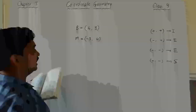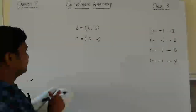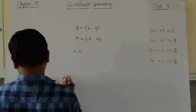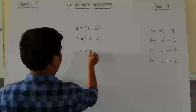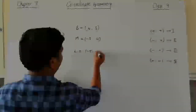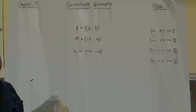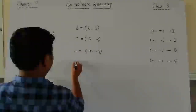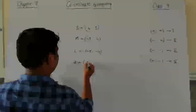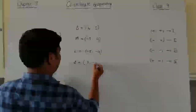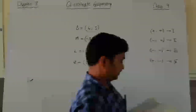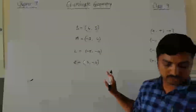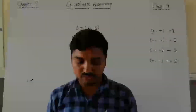For point M, x-coordinate is negative and y-coordinate is positive, confirming second quadrant. For point L in the third quadrant, it touches the x-axis at minus 5 and the y-axis at minus 4, so coordinates are minus 5 comma minus 4. That is the abscissa and ordinate respectively. For point S, x-coordinate is 3 and y-coordinate is minus 4, so coordinates are 3 comma minus 4. All four points lie respectively in the first, second, third, and fourth quadrants. Now moving to example 2.